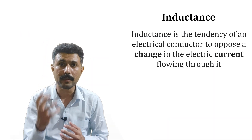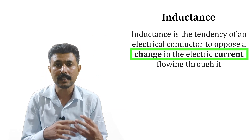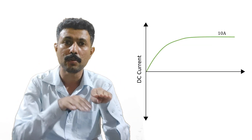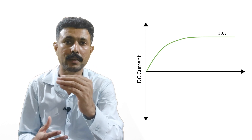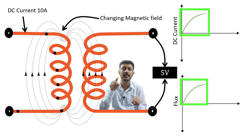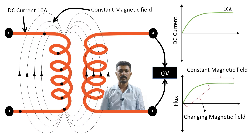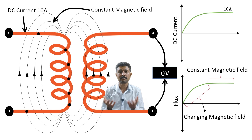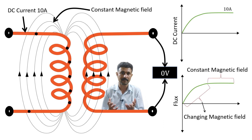Inductance is the property of a material that opposes the change in current. So when we suddenly start giving 10 amperes, the inductance of that coil will not allow the current to jump to 10 amperes immediately. Because of this we get a gradually changing current, which produces a gradually changing magnetic field. When the magnetic field is changing, it induces EMF in the secondary side. This is why we get some voltage initially. Once the current settles at 10 amperes, the magnetic field becomes constant, and with no changing magnetic field, we no longer get any induced EMF on the secondary side.